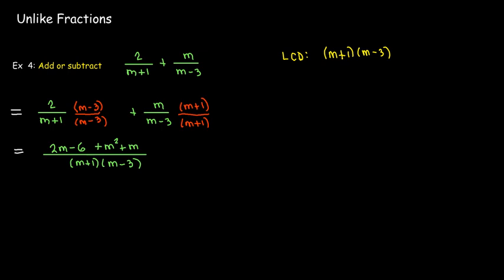And go ahead and multiply that out, collect any like terms. And then can I factor this? Well, I would need two numbers whose product is negative 6 and sum is positive 3. And the answer is that there are no such numbers. So m squared plus 3m minus 6 is a prime polynomial. Can't simplify it.